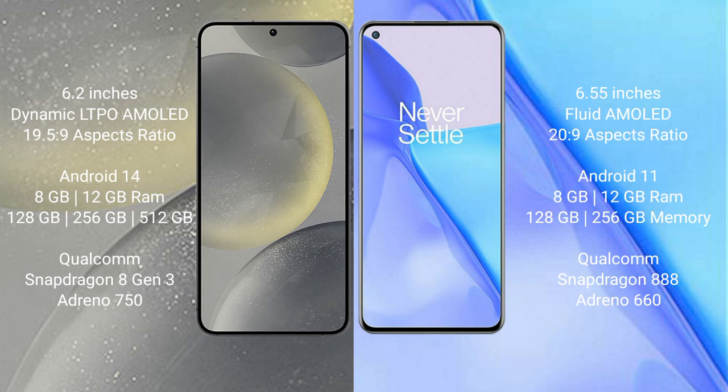Samsung Galaxy S24 comes with 8GB or 12GB RAM and 128GB, 256GB, or 512GB internal storage, with a Qualcomm Snapdragon 8 Gen 3 processor and Adreno 750 GPU. OnePlus 9 comes with 8GB or 12GB RAM and 128GB or 256GB internal storage, with a Qualcomm Snapdragon 888 processor and Adreno 660 GPU.